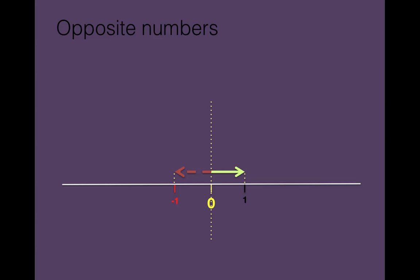Now if we extend the number line and we now put positive 2 and positive 3, then the evil twin brother of positive 2 will be negative 2, and the evil twin brother of positive 3 will be negative 3.